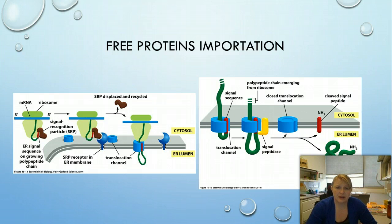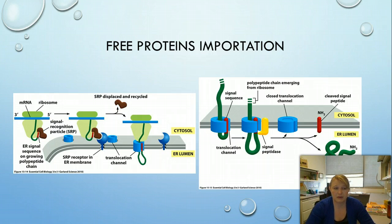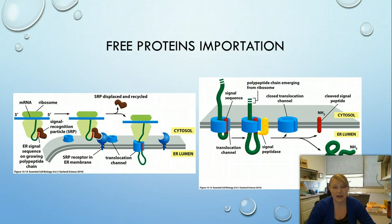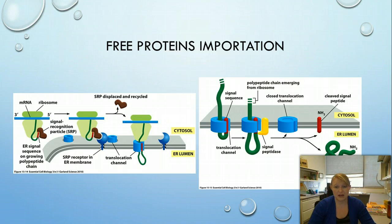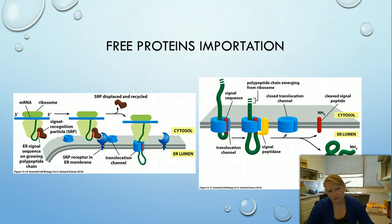Let's talk about how free proteins are imported, which is similar to what we discussed with the ER. A growing polypeptide chain has an ER signal sequence, and a signal recognition particle (SRP) guides the protein to the translocation channel on the ER. The channel threads the protein through and helps finish synthesizing it. The signal sequence gets cleaved, and the rest of the protein goes into the ER lumen and stays there as a fully solubilized, water-soluble protein performing its function.